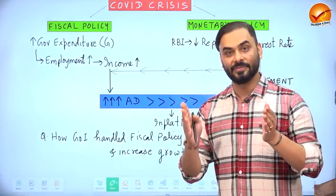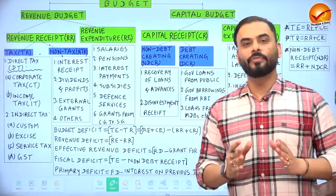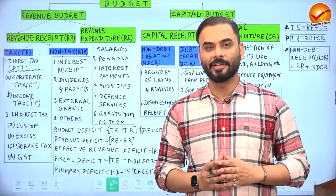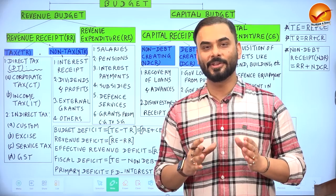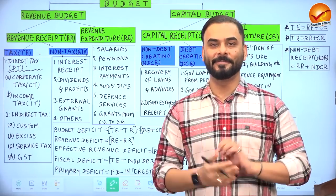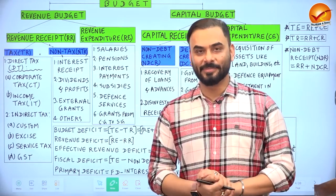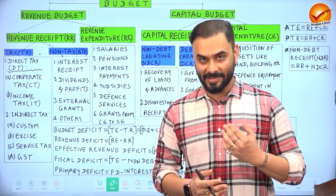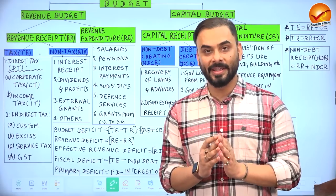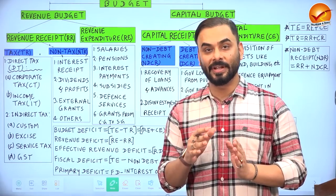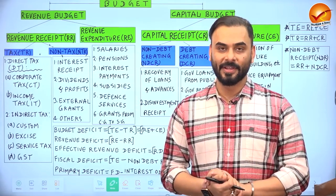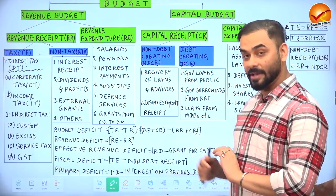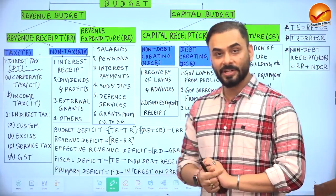Let us see how the Government of India used its budget to achieve these objectives. Before going deeper into fiscal policy and the budget, let us revise the various components of the budget in India. The budget basically contains the various sources through which the government earns revenue and the various ways in which it makes expenditure. The budget can be divided into two types: revenue budget and capital budget.